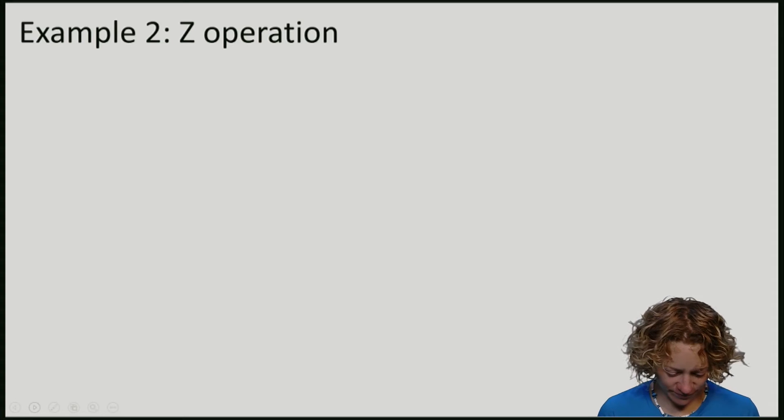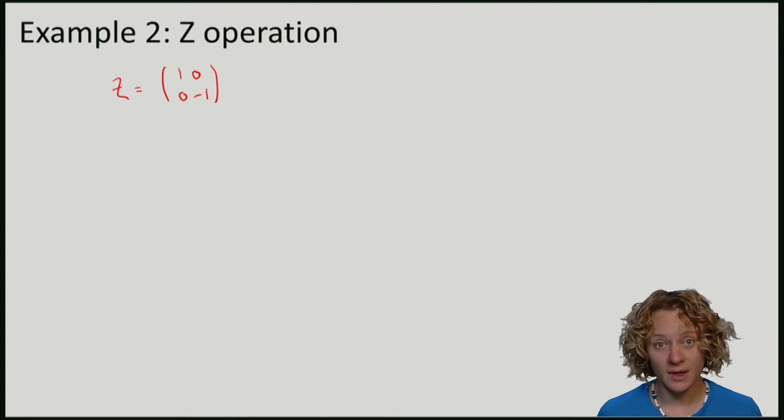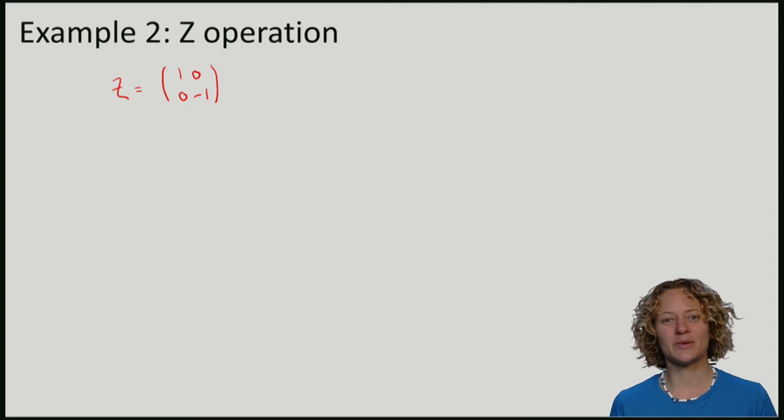Let's consider another example of a unitary operation, which is usually called Z. Z looks like this. And the first thing that we want to do is we want to check whether the matrix is unitary.